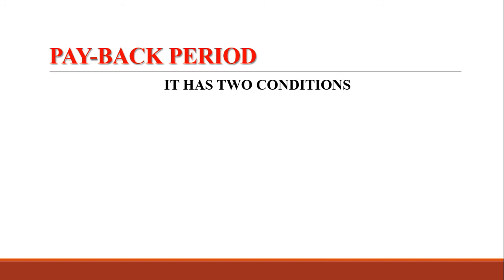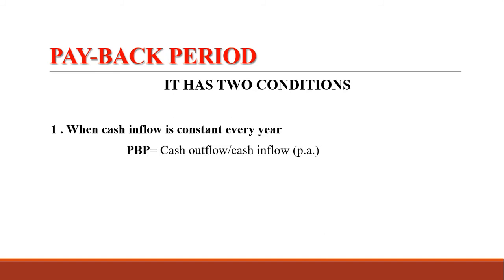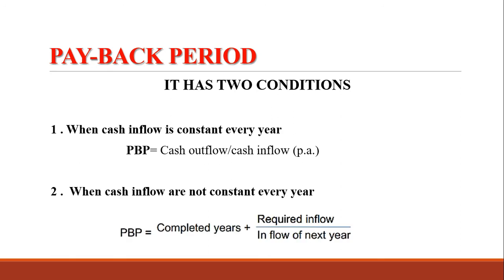The payback period method has two conditions. Number one: when cash inflow is constant every year, payback period equals cash outflow divided by cash inflow per annum. Number two: when cash inflows are not constant every year, payback period equals completed years plus required inflow divided by inflow of the next year. We will take one sum from each method to understand how to calculate payback period.